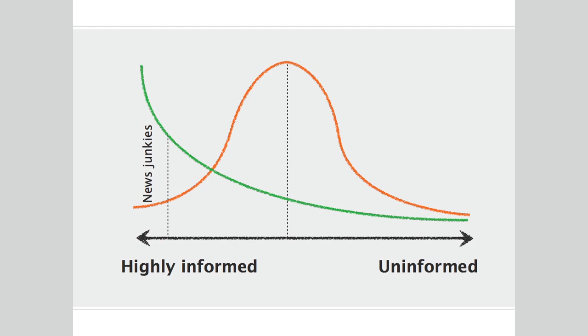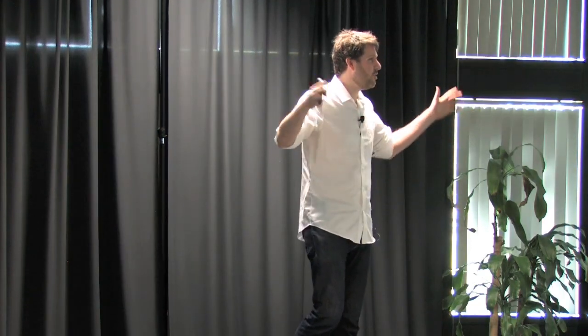In a broadcast era where there are three channels and the news is on from five to six, you get this nice bell curve in political informedness. Because if you totally want to know everything that's going on in the news, your only chance to do so is between five and six. And if you don't want to know anything about the news but you want to watch TV between five and six, you have to watch the news. There's this leveling effect where everyone clusters around the middle.